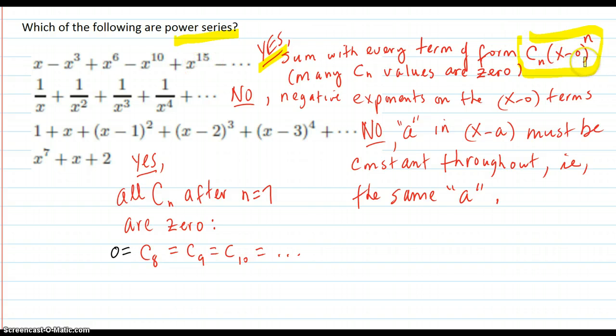There's no a in there, (x minus zero) all to the n power. Some of the c_n's are zero, but that's okay. You've got all these n's and all these terms in between here, all those c_n's are zero, but that's okay.